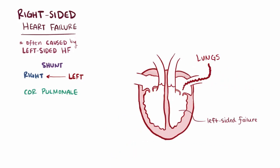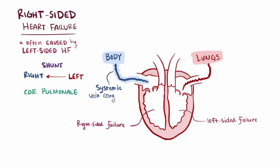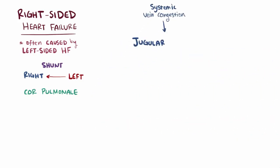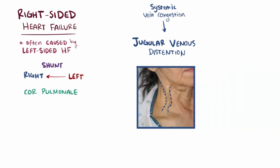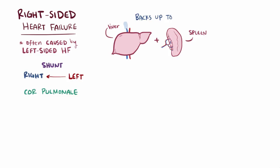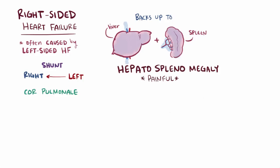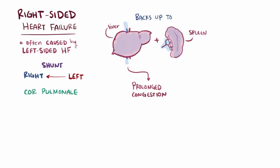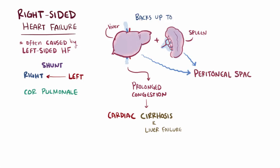With left-sided failure, blood gets backed up to the lungs. With right-sided failure, blood gets backed up to the body, so patients have congestion in the veins of the systemic circulation. One common manifestation is jugular venous distension, where the jugular vein becomes enlarged and distended in the neck. When blood backs up to the liver and the spleen, fluid can move into the interstitial spaces within those organs and they can become enlarged — called hepatosplenomegaly — which can be painful. If the liver is congested for long periods of time, patients can eventually develop cirrhosis and liver failure, which is called cardiac cirrhosis. Excess interstitial fluid near the surface of the liver and spleen can also move into the peritoneal space, and since that cavity can hold a lot of fluid before any increase in pressure, a lot of fluid can build up there, which is called ascites.